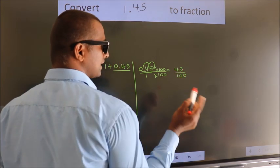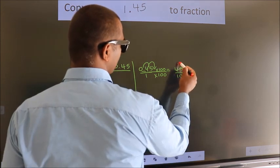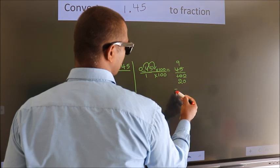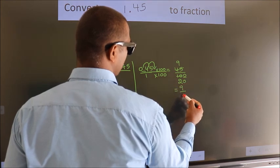Now I cancel with 5. 5 goes into 45 nine times, 5 goes into 100 twenty times. So the fraction we got is 9 over 20.